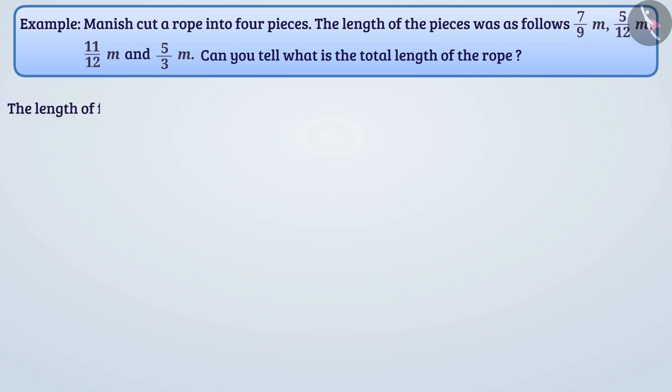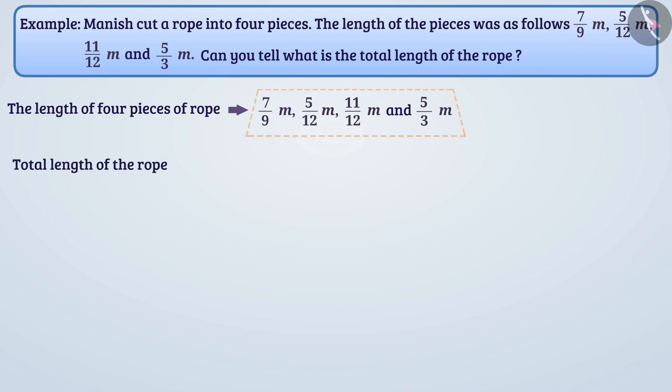The length of four pieces of rope is 7/9 meter, 5/12 meter, 11/12 meter and 5/3 meter. Therefore, the total length of the rope will be the sum of these four pieces.